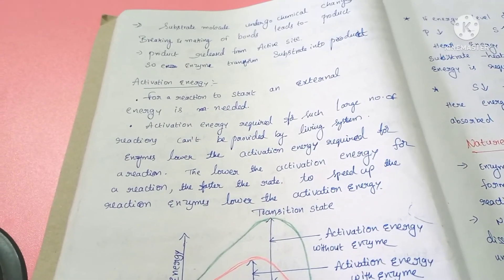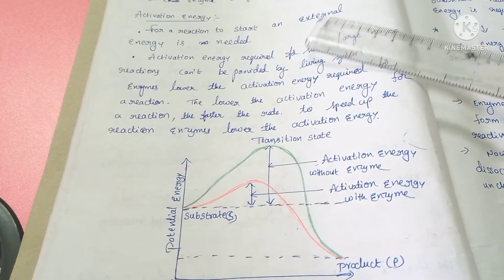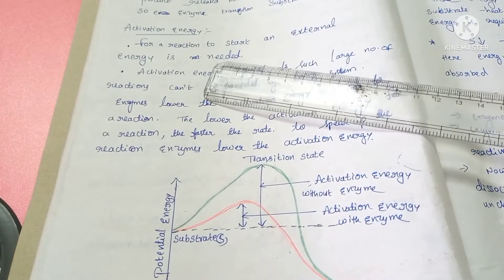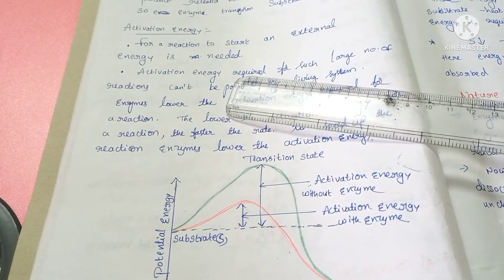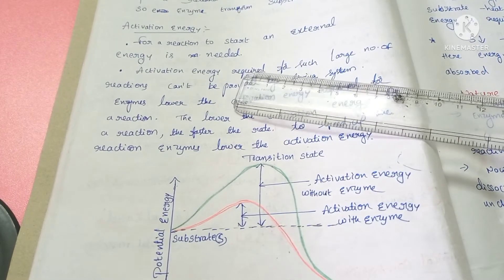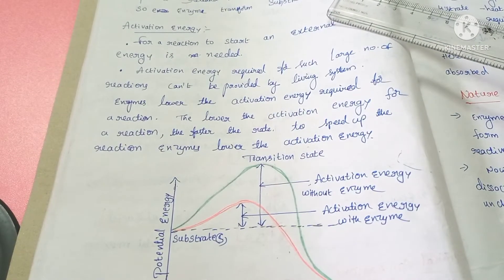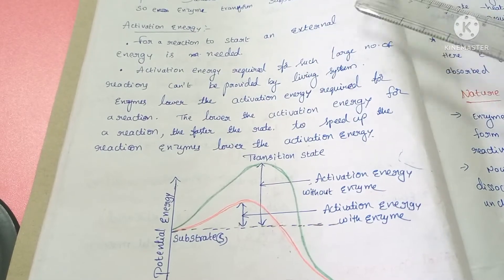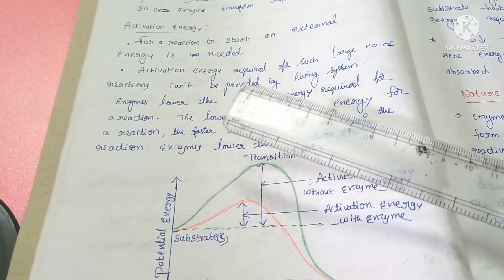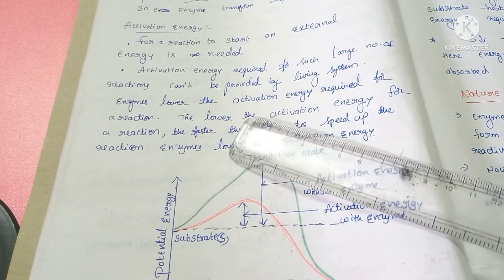The next topic is activation energy. What is activation energy? For any reaction to start, an external energy is needed — that is called activation energy. That activation energy, which is required for such a large number of reactions, cannot be provided by living systems. Hence, enzymes lower the activation energy required for the reaction.